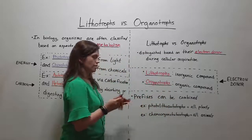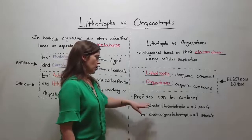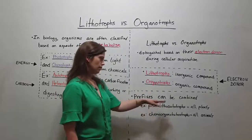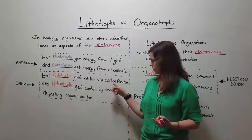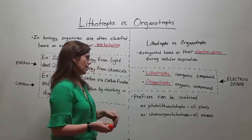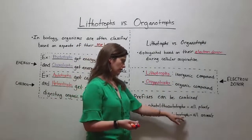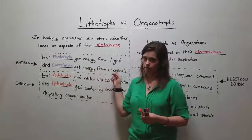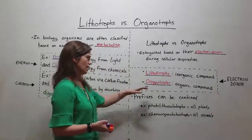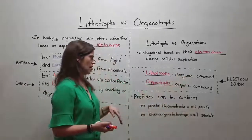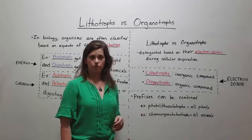You should also be aware that these various prefixes can be combined. For example, we can talk about certain groups of organisms that are photolithoautotrophs. All plants are photolithoautotrophs — they get their energy from light, they get their carbon from carbon dioxide via carbon fixation, and their electron donor is an inorganic compound. All animals, on the other hand, are chemoorganoheterotrophs — animals get their energy from chemical bonds, get their carbon from absorbing and ingesting other organic materials, and the electron donor is an organic compound.